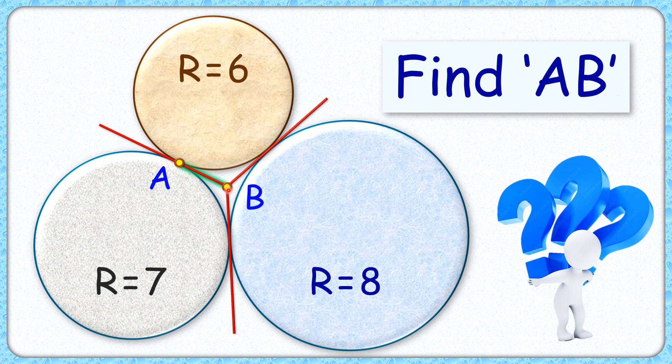These three tangents meet at point B. The brown and gray circles meet at point A. The question is: with this limited data, we have to find the length of line segment AB.